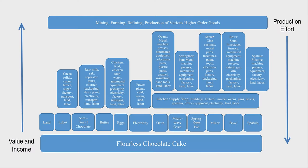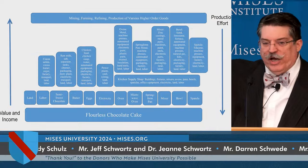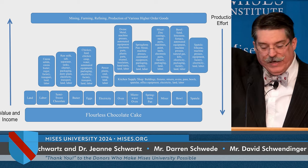There are a couple of important fundamental principles here. One is that production effort moves down the structure of production. It begins at the top highest stages. You don't produce the flourless chocolate cake first and then produce the butter, and you don't produce the butter first and then produce the raw cream. Somebody has to engage in producing cream first before someone can take that cream and put production effort into producing the butter. Only after the butter is made can someone produce the flourless chocolate cake. Production effort begins at the highest stages and directionally moves down the structure of production.